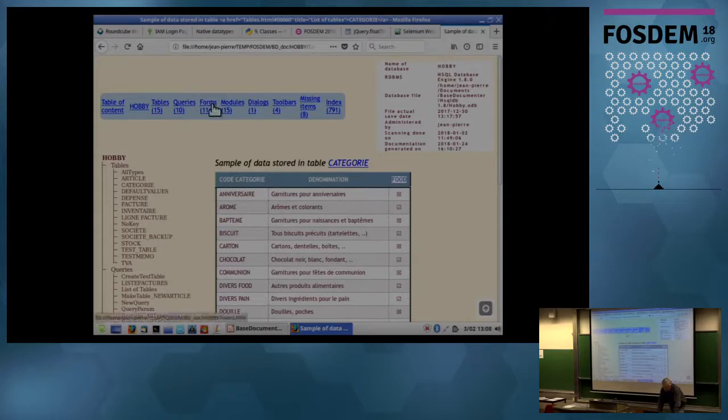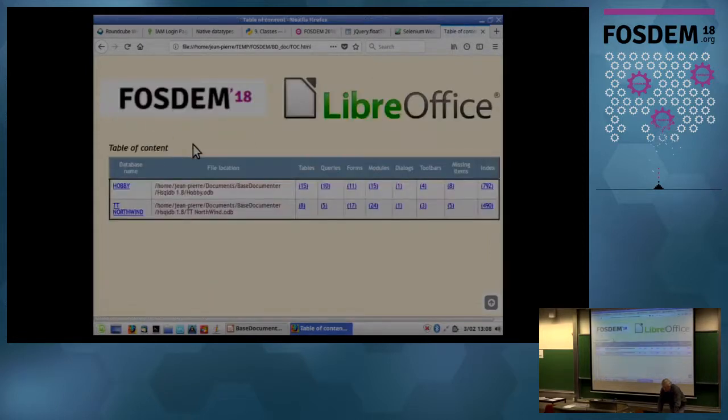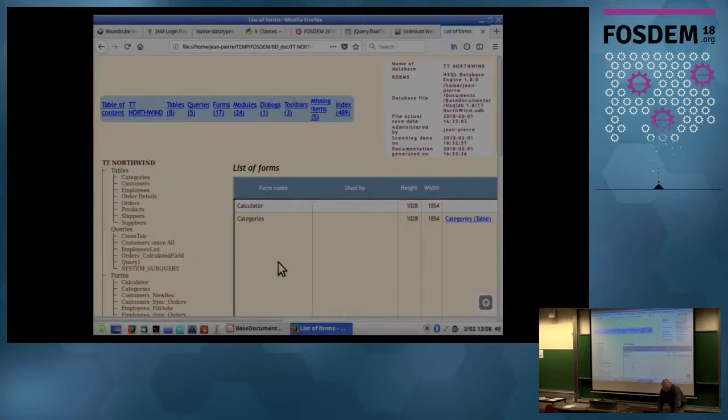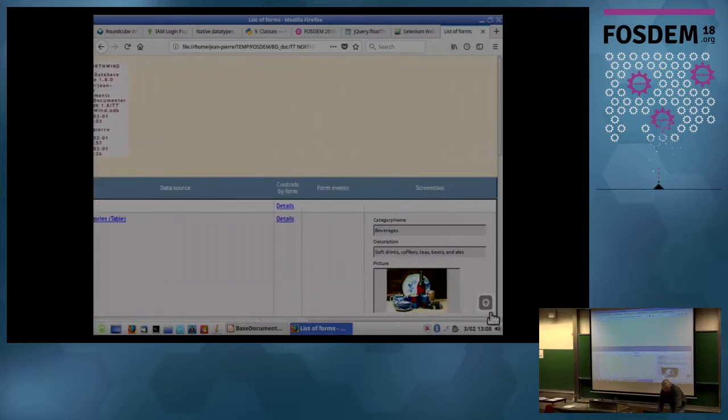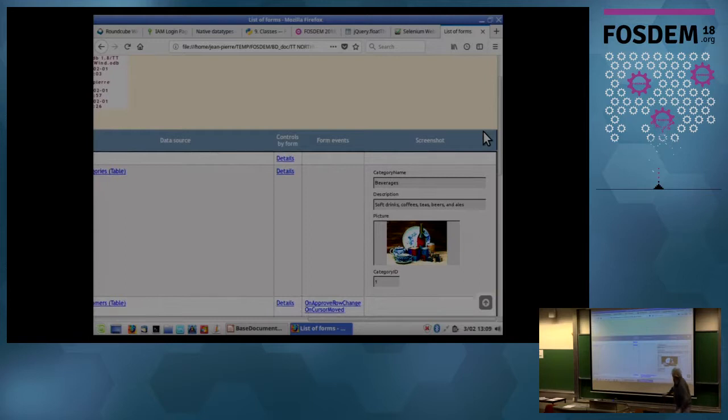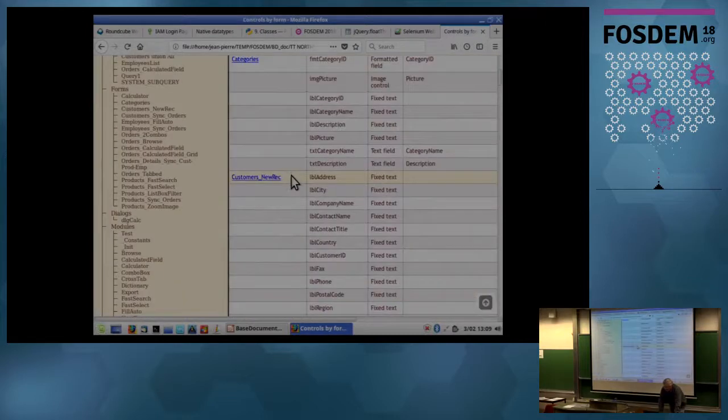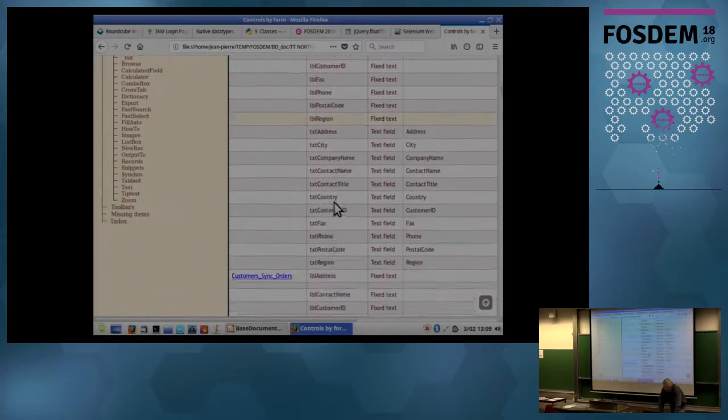So in the same way, you can have forms, information about forms. What is specific for forms? You can also store screenshots of the forms within the table. In the details column here, you have also a list of controls that you find in the form.